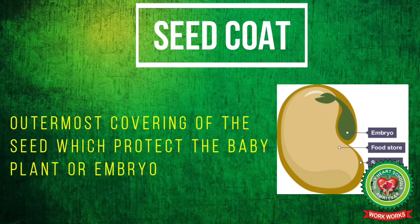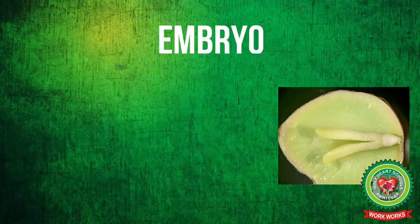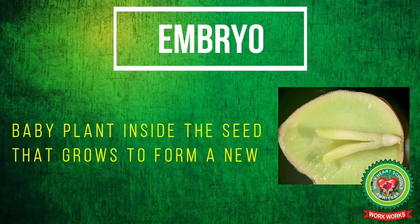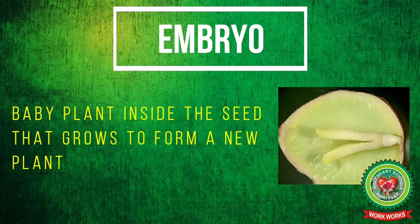The seed coat is the outermost covering of the seed which protects the baby plant or embryo. Now, what is the embryo? The embryo is the baby plant inside the seed that grows to form a new plant.